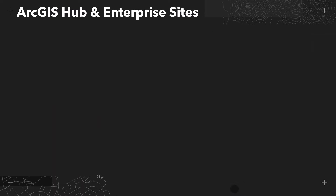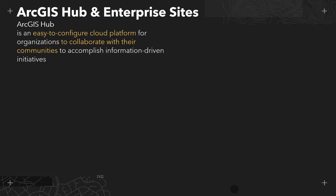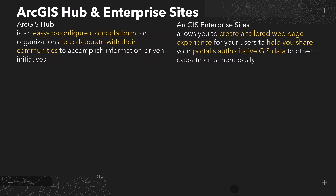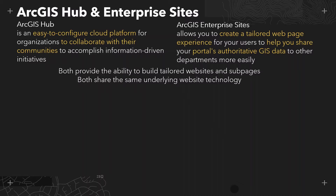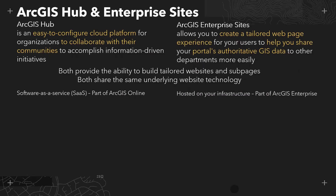Let's begin with an overview of Enterprise Sites and ArcGIS Hub. ArcGIS Hub is an easy to configure cloud platform for organizations to collaborate with their communities and accomplish information-driven initiatives. ArcGIS Enterprise Sites allows you to create a tailored web page experience for your users to help you share your portal's authoritative GIS data to other departments more easily. They both provide the ability to build tailored websites and sub pages and they both share the same underlying website technology, but that's pretty much where the similarities end.